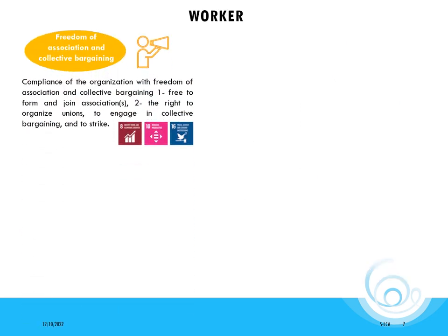The social themes associated with employees include the freedom of association and collective bargaining theme. This theme is related to three sustainable development goals: decent work and economic growth, reduced inequalities, and peace, justice, and strong institutions.